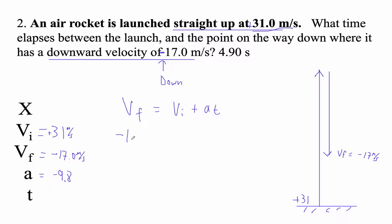Final velocity is negative 17. So remember, you've got to put those minus signs on there. That's the whole point of this, 31 plus negative 9.8 t.